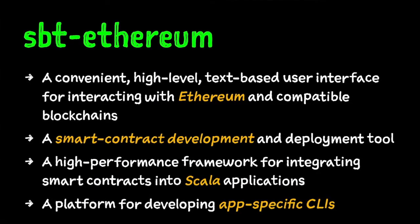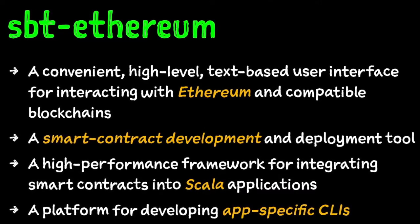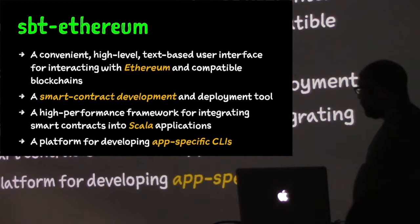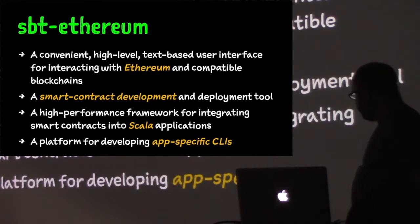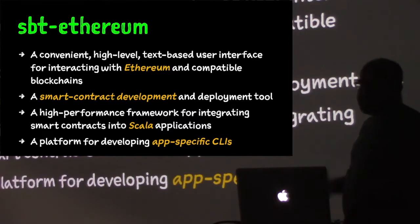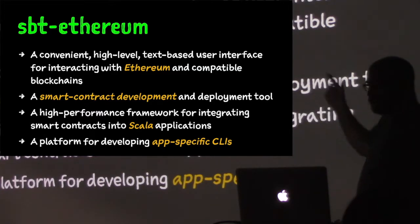So SBT Ethereum — what is it? It's basically a shell for Ethereum. You can use it to develop and deploy smart contracts. If you happen to be a Scala or JVM developer, it generates carefully thought out, scalable, high-performance tooling for integrating smart contracts with Scala or JVM applications. You can also use it to develop your own command line interfaces. First you write a smart contract, then you can extend SBT Ethereum as a platform for writing very quick and dirty CLIs that automate a little bit of the annoyance of working with a smart contract interface.